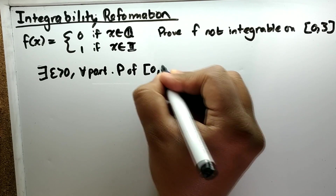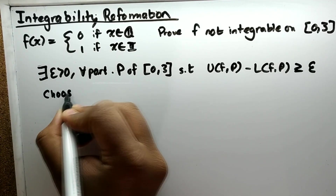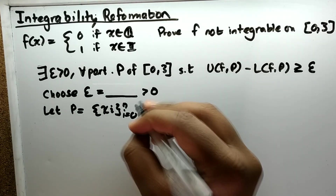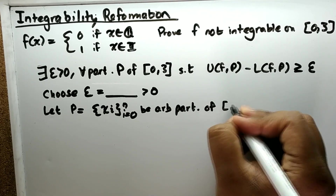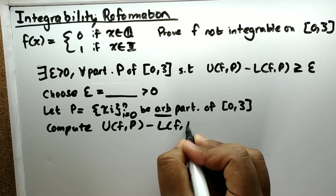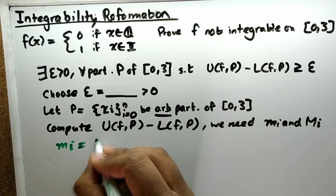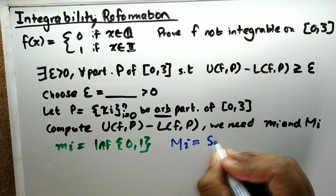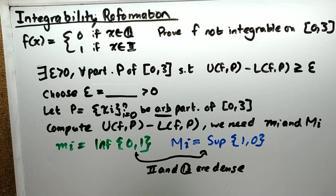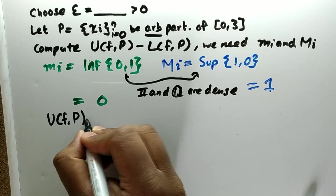The IR definition states: there exists epsilon greater than 0 such that for all partitions P of [0, 3], the upper sum minus the lower sum is greater than or equal to epsilon. We let P be an arbitrary partition of [0, 3]. To compute the upper sum minus the lower sum, we need m_i and M_i. As before, since rationals and irrationals are dense, small m_i is the infimum of {0, 1} = 0, and capital M_i is the supremum of {0, 1} = 1.